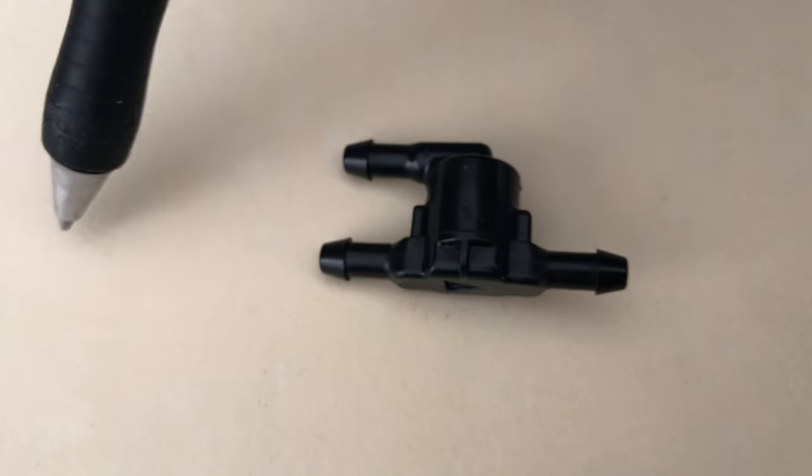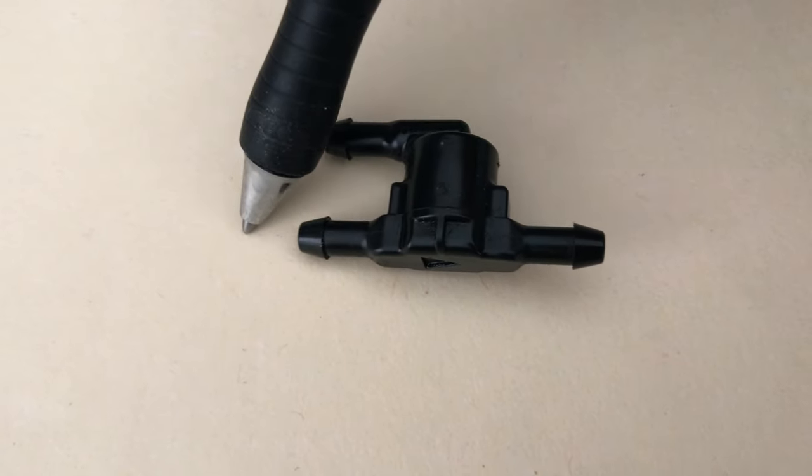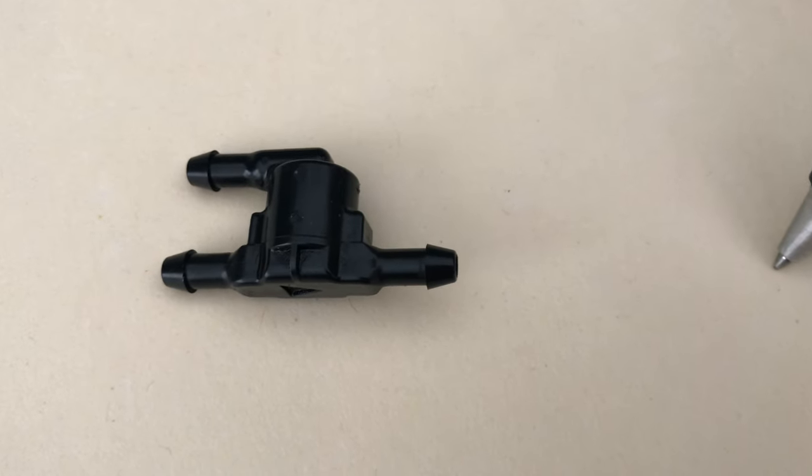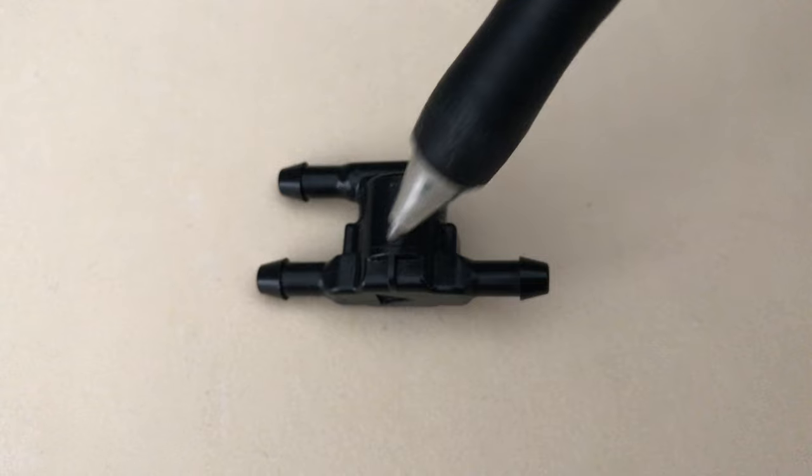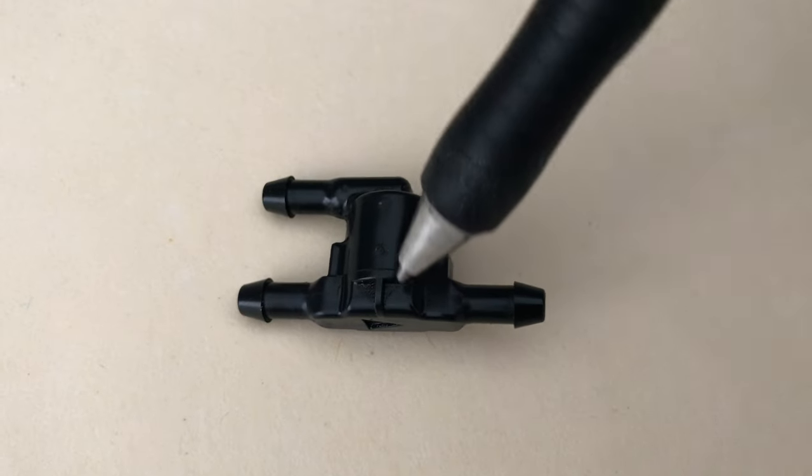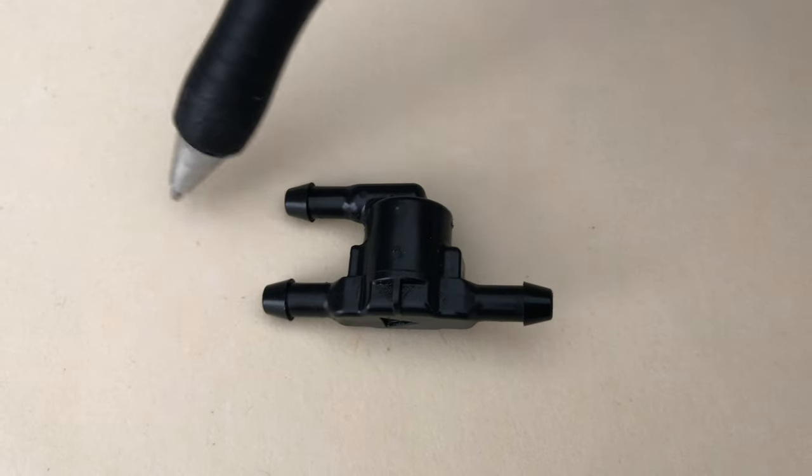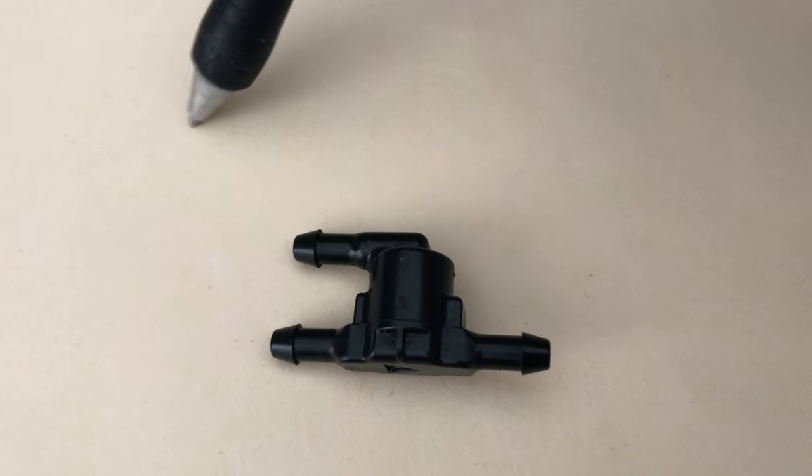Basically what you have is flow coming in this way, flow passed through to the driver's side windshield wiper nozzle spray. This is the passenger right here, window nozzle spray goes up and then this goes up to the nozzle which sprays on your windshield.